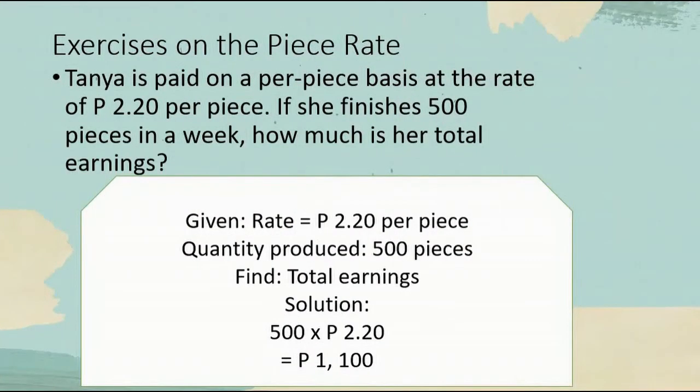Exercises in Piece Rate. Tanya is paid on a per-piece basis at a rate of 2 pesos and 20 centavos per piece. If she finishes 500 pieces in a week, how much is her total earnings? Given: Rate is equal to 2 pesos and 20 centavos per piece. Quantity produced is 500 pieces. Find: Total Earnings. Here is the solution. 500 multiplied by 2 pesos and 20 centavos is equal to 1,100 pesos.